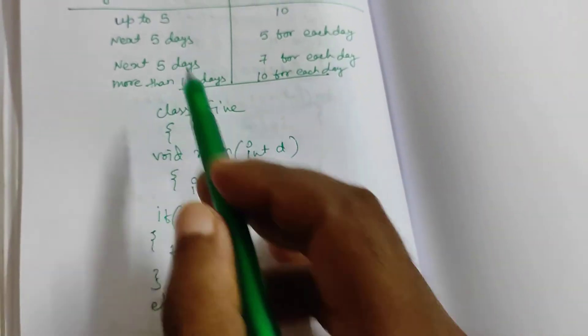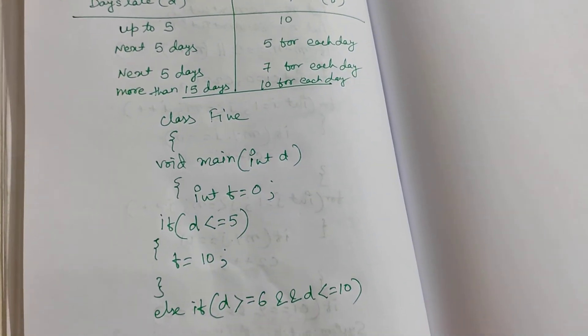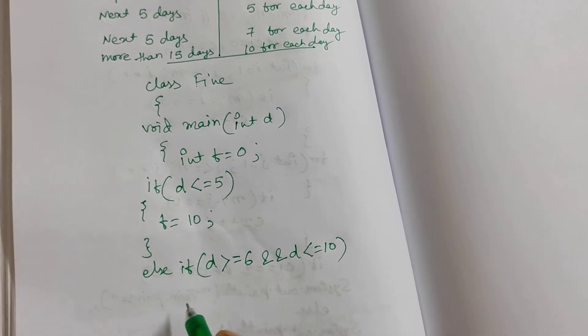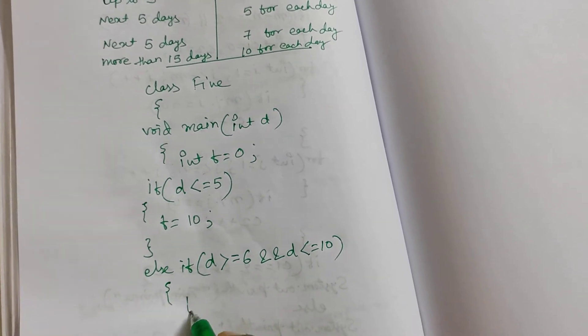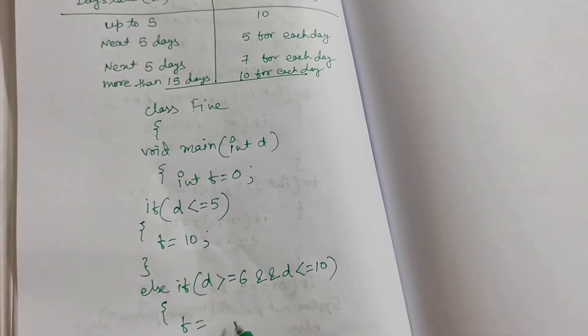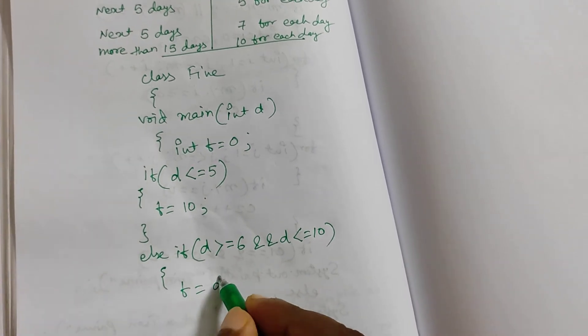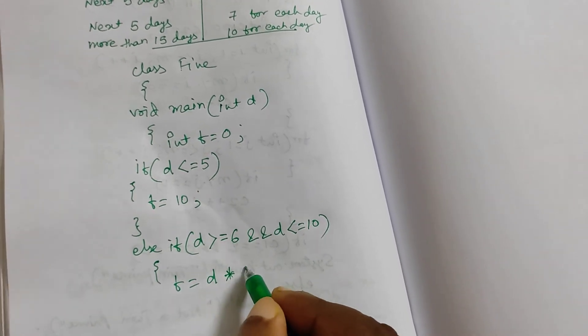Why? Because next 5 day means 6 day to 10 day. Automatically if you will add, you will get 6 to 10. So fine you have to pay 5 rupees each day. That means d into 5.